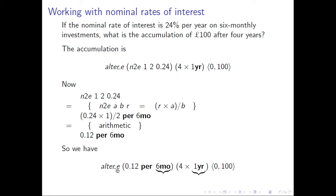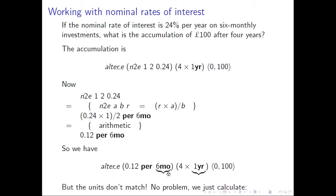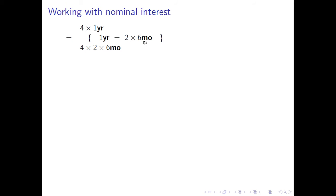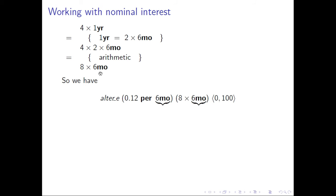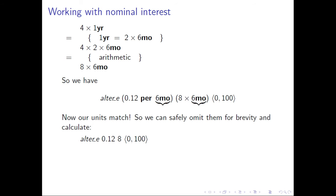We can now rewrite this as alter_e(0.12 per six months, 4×1 year, 100 at zero). But there's a problem — the units don't match. We have an effective rate per six months, but the time period is in years. However, we can just calculate: 4×1 year, since one year equals 2×six months, equals 4×2×six months, which equals 8×six months. So our expression becomes alter_e(0.12 per six months, 8×six months, 100 at zero). Now our units match, so we can safely omit them for brevity and calculate.